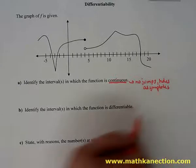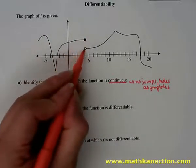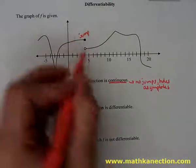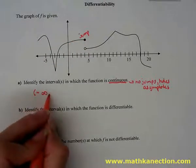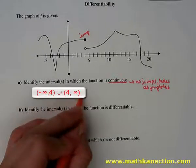We look at the graph for any jumps, holes, or asymptotes, and that's where the function is not going to be continuous. At x equals 4, we can see there's a jump in the graph. So our function is continuous from negative infinity to 4 union 4 to infinity.